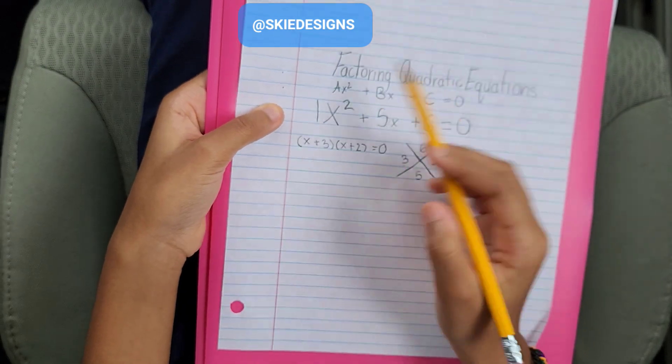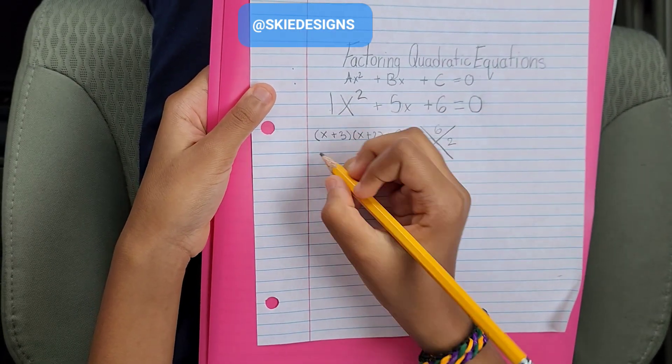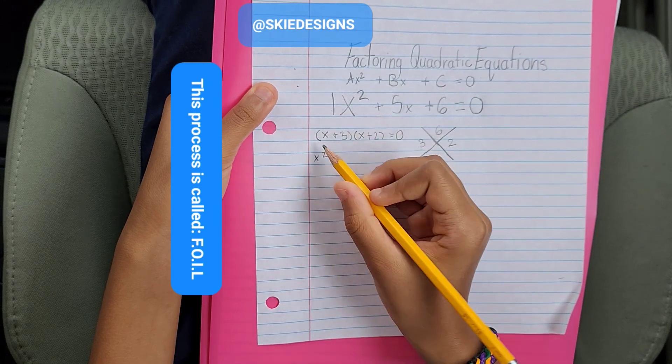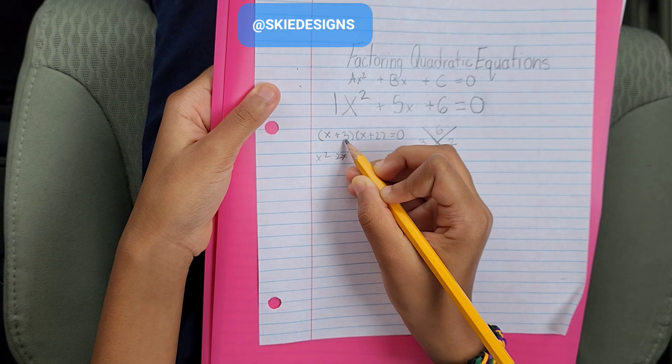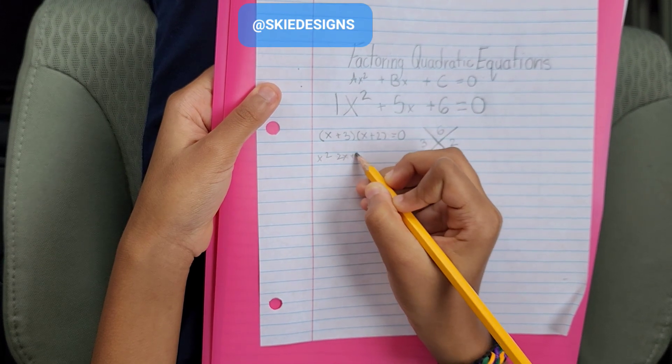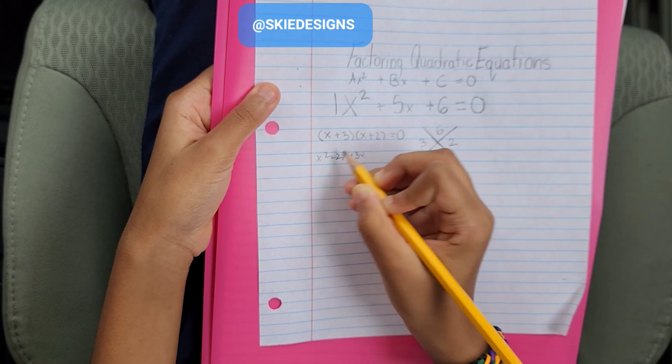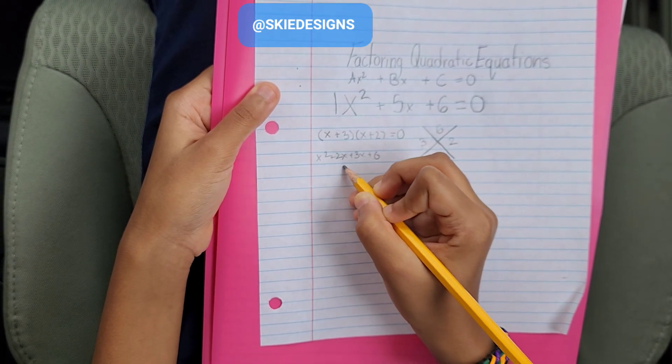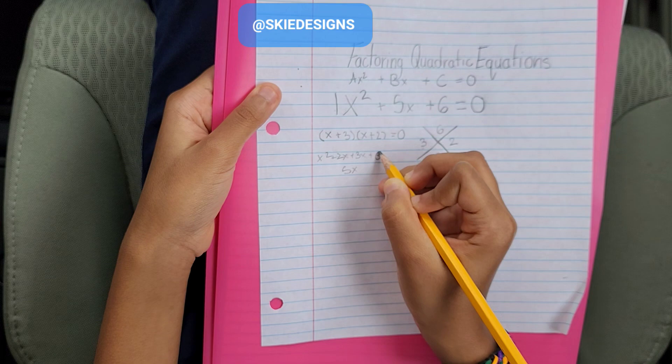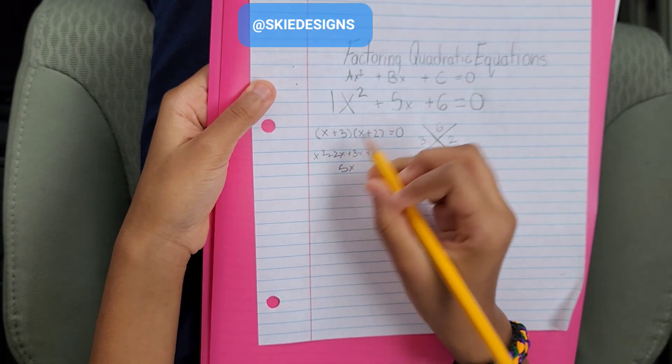So, just to double check our work, x times x is x squared, x times 2 is 2x, and 3 times x is 3x. 3 times 2 is 6. 2x plus 3x gives us 5x. So that will be our equation.